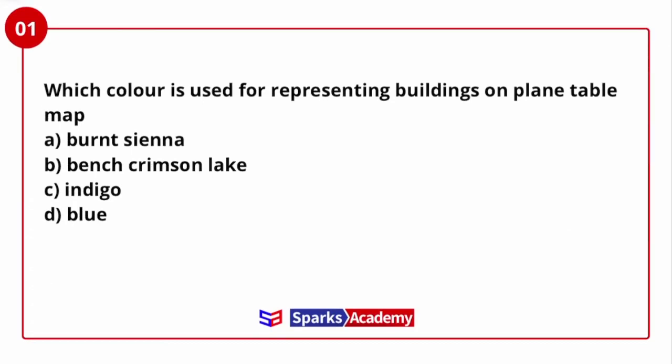First question: which colour is used for representing buildings on a plain table map? On a plain table map, buildings are represented by a specific colour. You can see questions related to methods such as the intersection method, resection method, and accessories like the spirit level, plane table, or telescope. Inking, colouring, and tracing of the plane table paper is very important. This portion will have objective-based questions, so memorize them carefully.